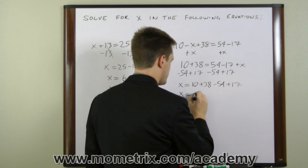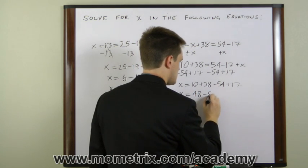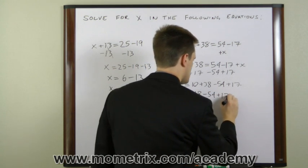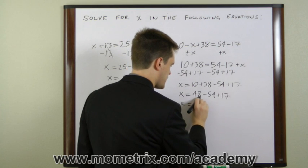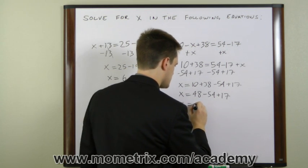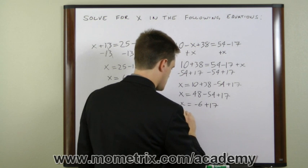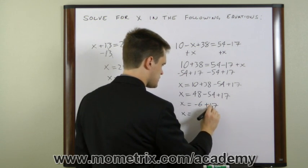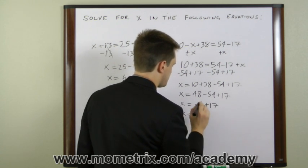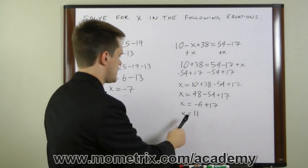10 plus 38 is 48, 48 minus 54 is negative 6, and negative 6 plus 17 is 11. So in this equation, x equals 11.